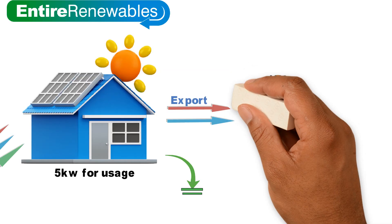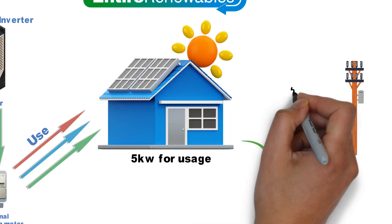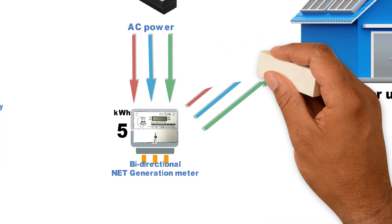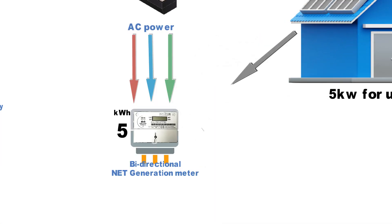Now let's say you import 5 kilowatts of electricity from the grid at a cheap rate to store in the battery for use later. This power will pass through the bi-directional net generation meter where it now clocks down the number of kilowatt hours from the digital display leaving the new reading as 0 kilowatt hours.